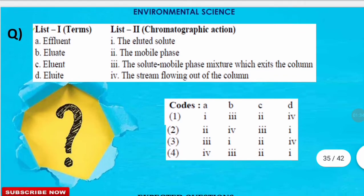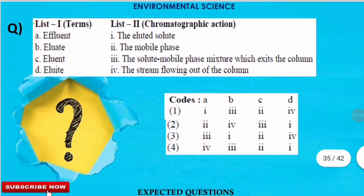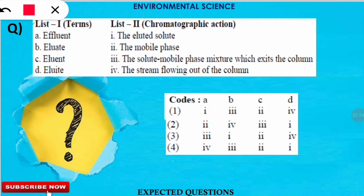The next question is a match-the-following. List one gives terms and list two gives chromatographic actions. Sometimes knowing just one term lets you solve the whole question. For example, 'effluent' means the stream flowing out of the column — so A matches with option four in list two.